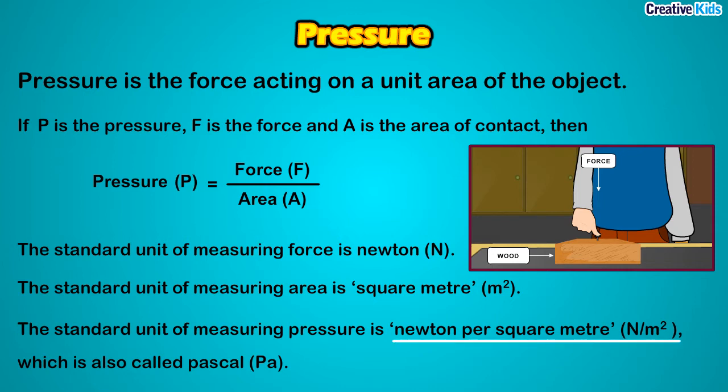The standard unit of measuring pressure is Newton per square meter. This is also called Pascal, named after the great scientist. So the standard unit of measuring pressure is Newton per meter square, also called Pascal.